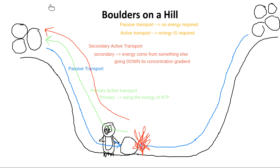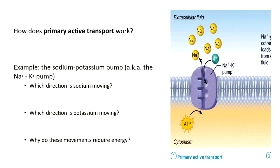This analogy is also described in the guided lesson, so you can go through and see a description of each of these steps. Now I want to look at specific examples of the two kinds of transport — starting with primary active transport.